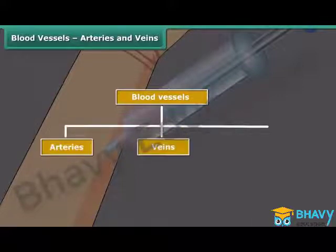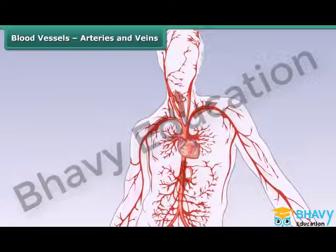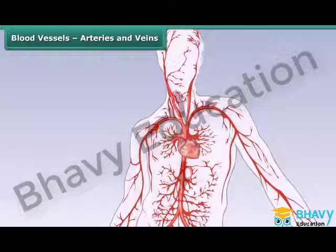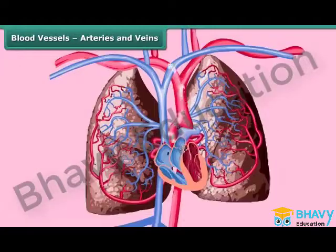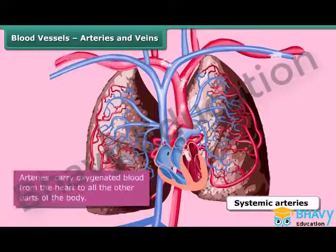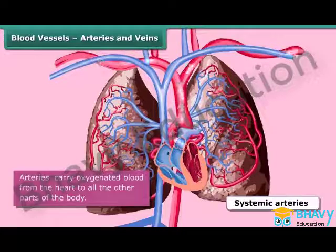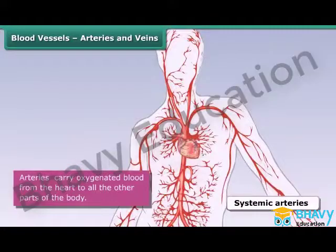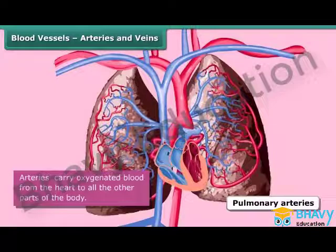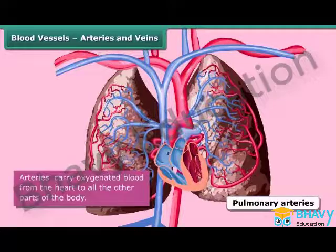Arteries, veins, and capillaries. Arteries are blood vessels with thick walls. They carry oxygenated blood from the heart to all other parts of the body. Arteries are of two types: systemic arteries, which carry oxygenated blood from the heart to the other parts of the body, and pulmonary arteries, which carry deoxygenated blood from the heart to the lungs.